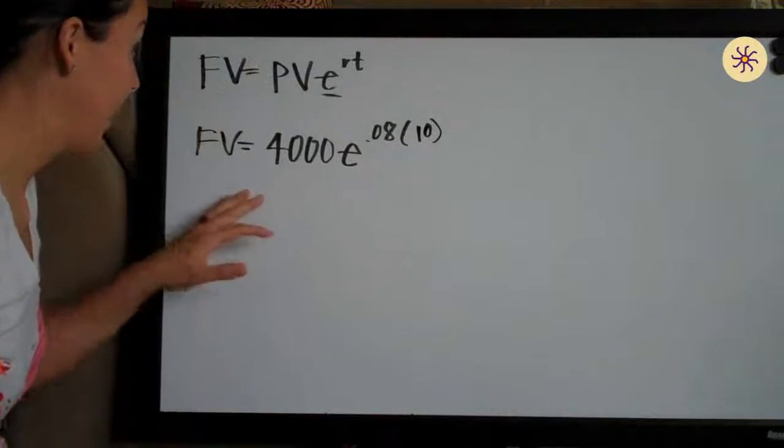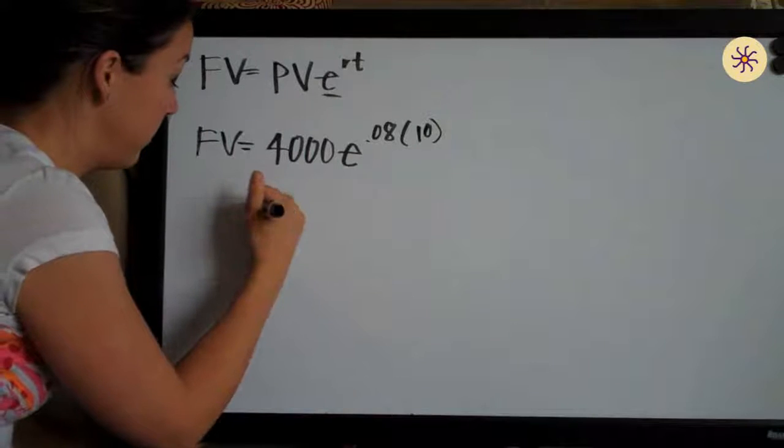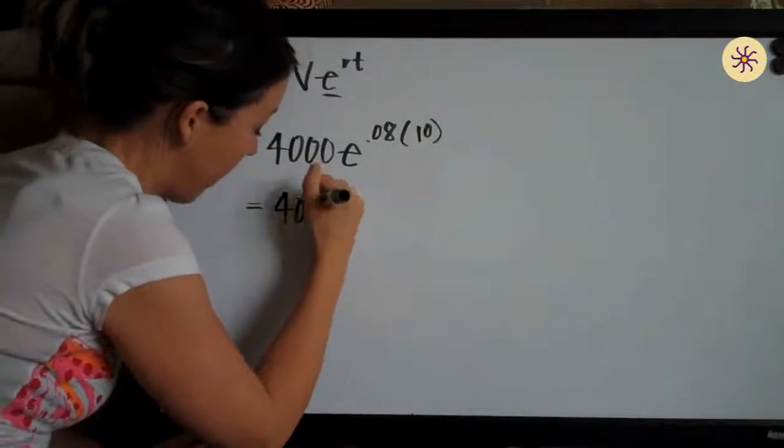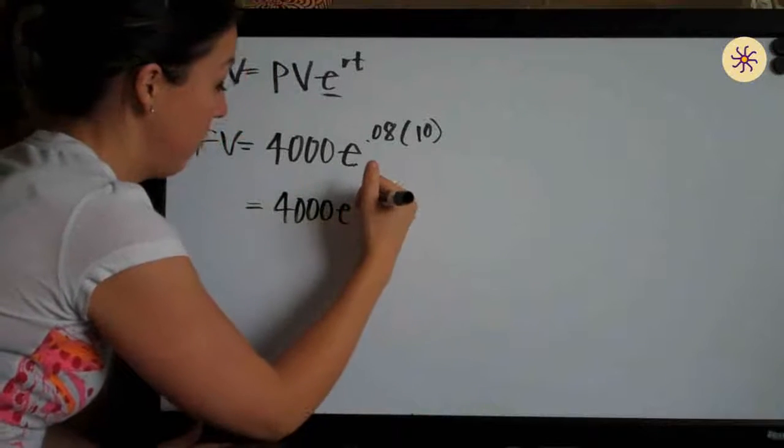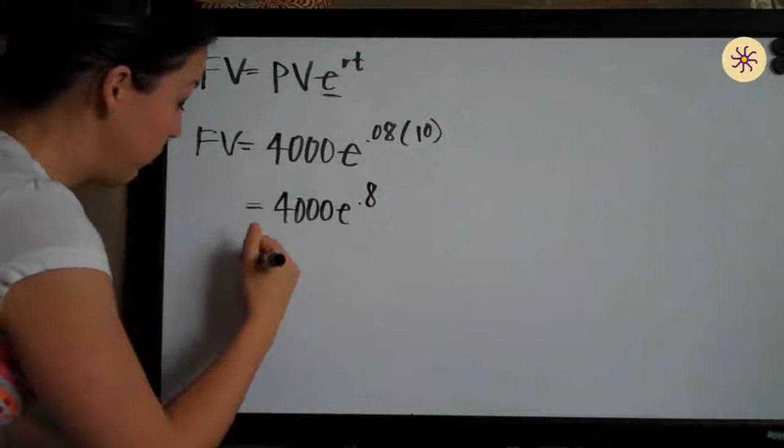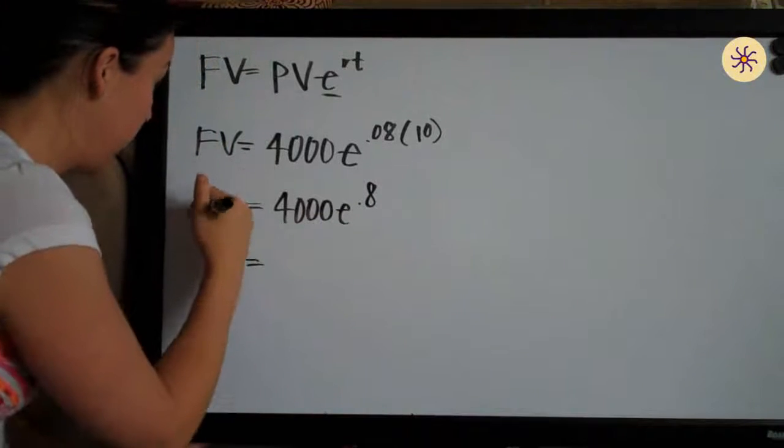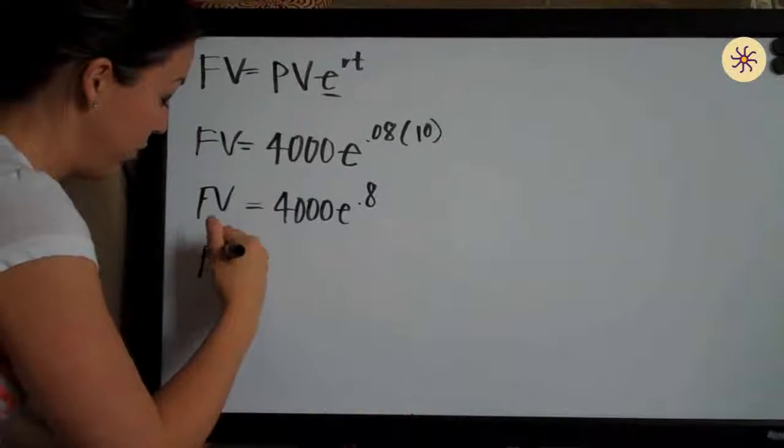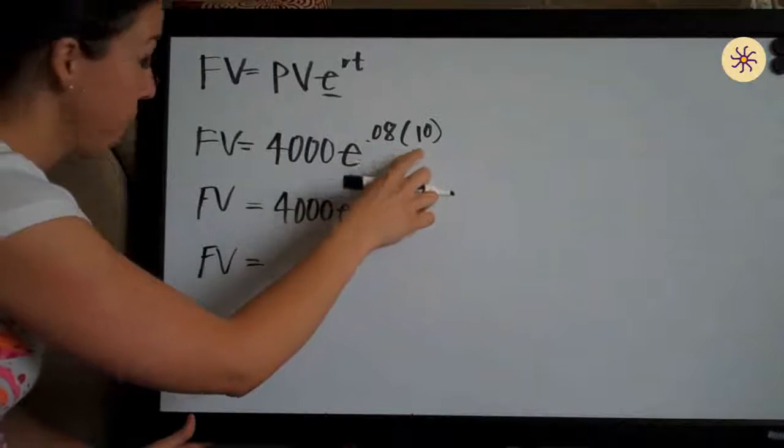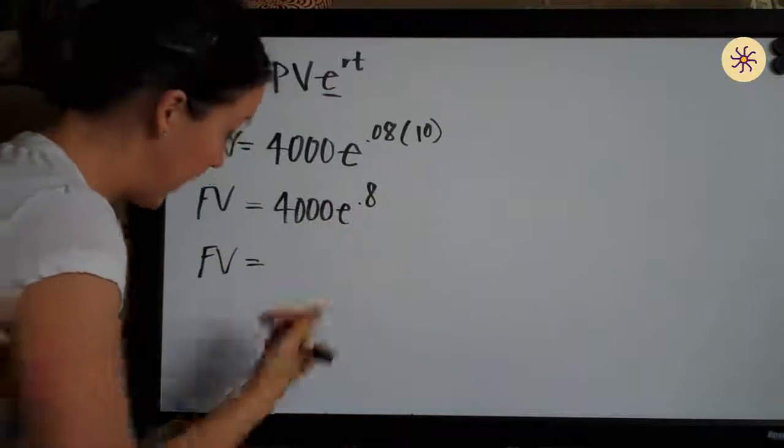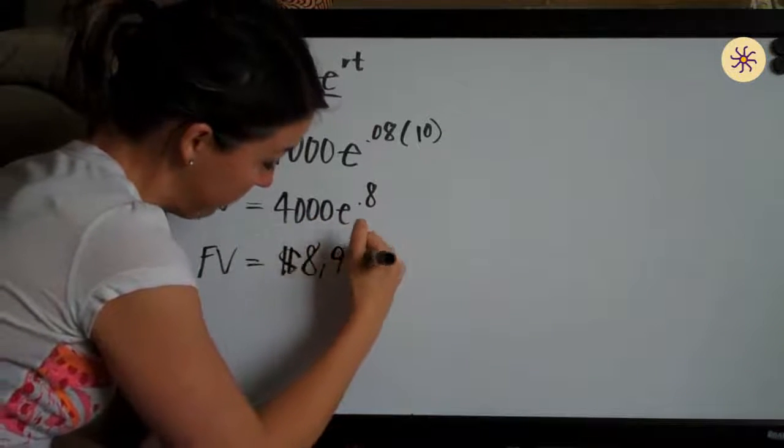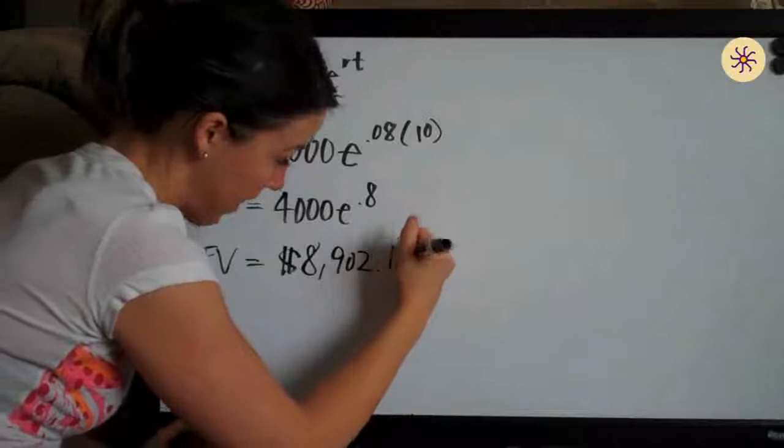And it's as simple as that. All we need to do now is go ahead and use a calculator to solve. You could simplify and say 4,000 e to the 0.8, but then this is something that you do on your calculator, and the future value of $4,000 at 8% interest rate after 10 years looks like it ends up being $8,902.16.